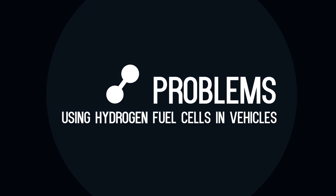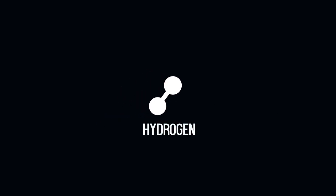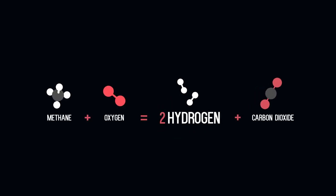There are two major problems to using hydrogen fuel cells in vehicles. Firstly, where do you get the hydrogen? Currently most industrial hydrogen is derived from methane and the carbon is rejected as carbon dioxide, thus adding to the greenhouse effect.